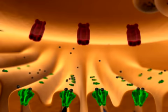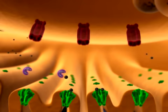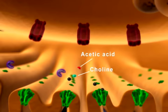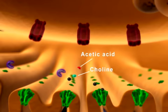Second, acetylcholine is broken down by the enzyme acetylcholinesterase to acetic acid and choline. Choline is then transported into the axon terminal for the resynthesis of acetylcholine.